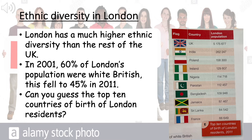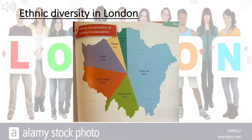Now looking at the right hand side, I've included the top 10 countries of birth of London residents. Have a go now and see if you can guess the order of those countries and what they are. This graphic, which uses London as a pie chart — a great presentation technique — demonstrates our diversity and shows how our largest groups, which are white UK, white other, South Asian and black, make up a large proportion of our ethnic diversity.